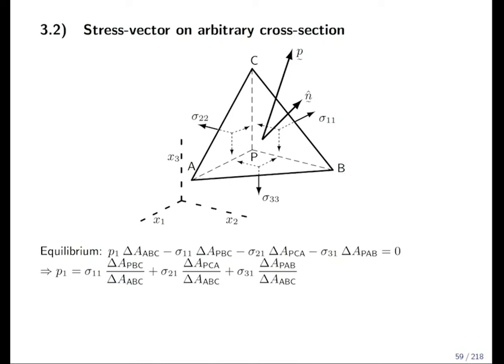This is force equilibrium for one component of the force in the one direction only, not in all directions. Now since delta ABC is the one which we know, and we want to know P1, we divide the whole equation by delta A ABC. That comes on the denominator.